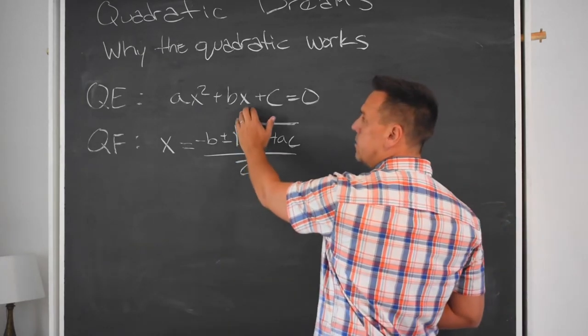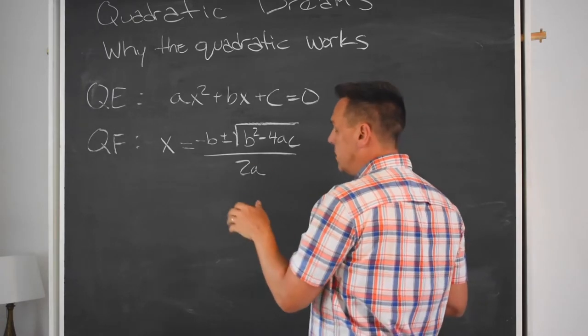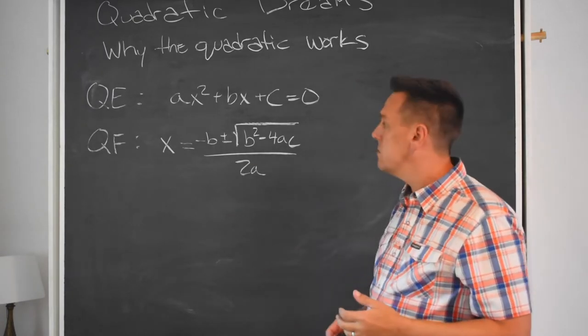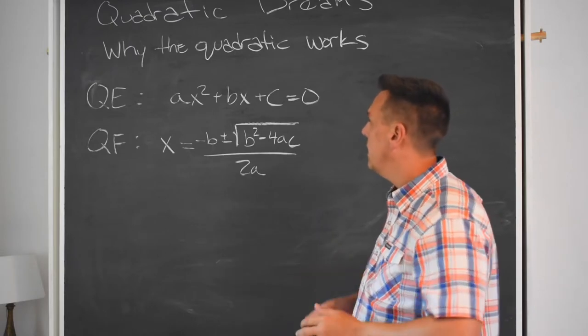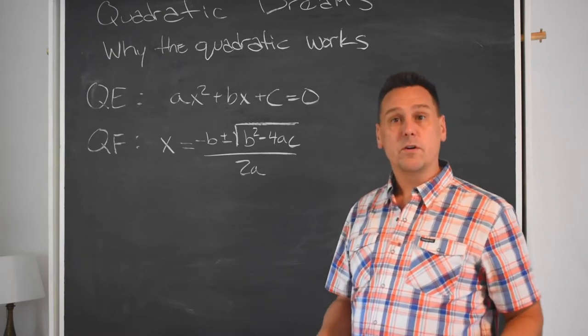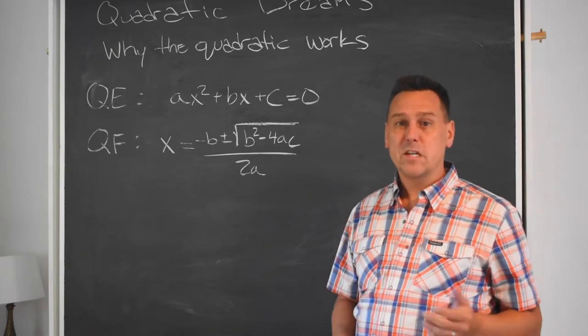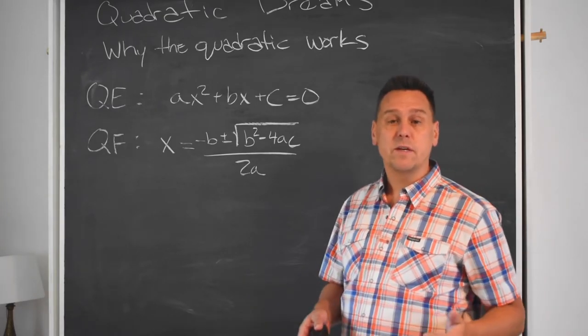We should be able to take this equation, this is the quadratic equation, and do some stuff to it that's legal in the world of equations. You know, dividing through by things, moving things over, blah blah blah. And eventually end up with x by itself on one side of the equation. A solved equation for x. Anything that doesn't change the truth value of the equation, we should be allowed to do.